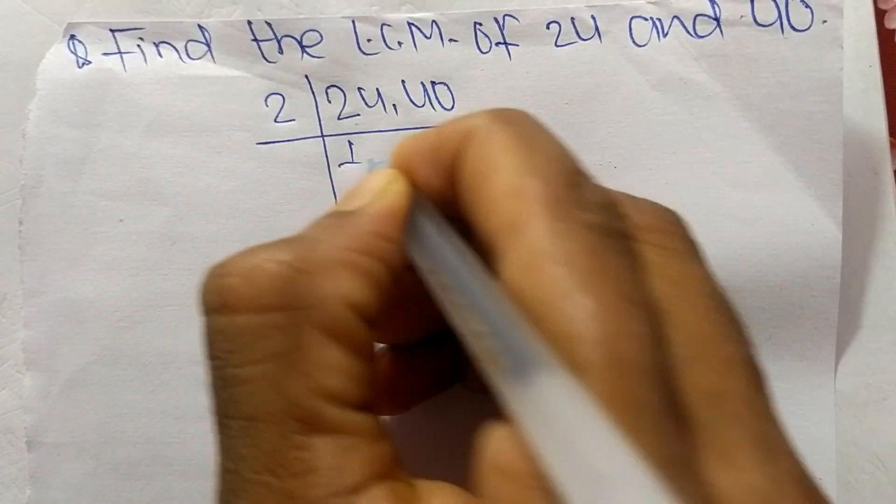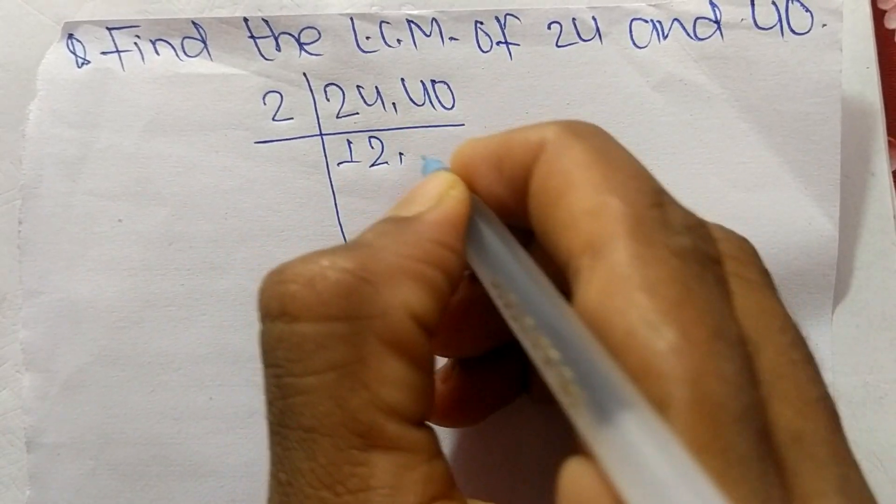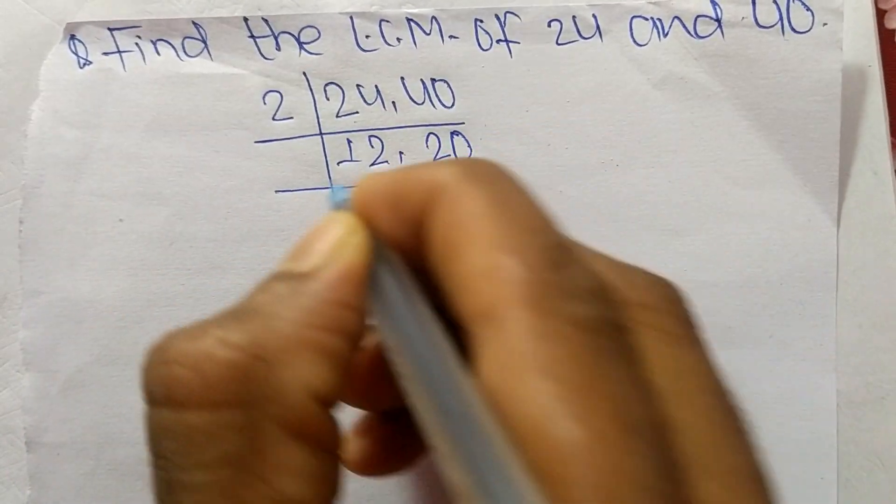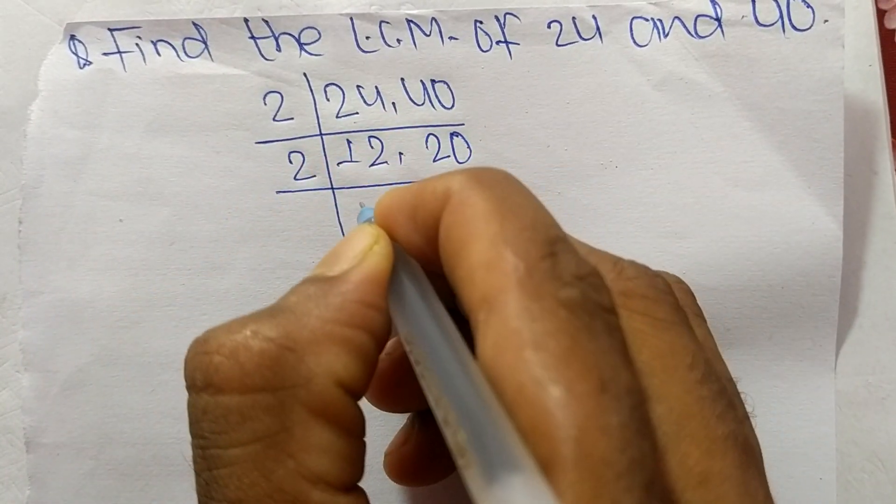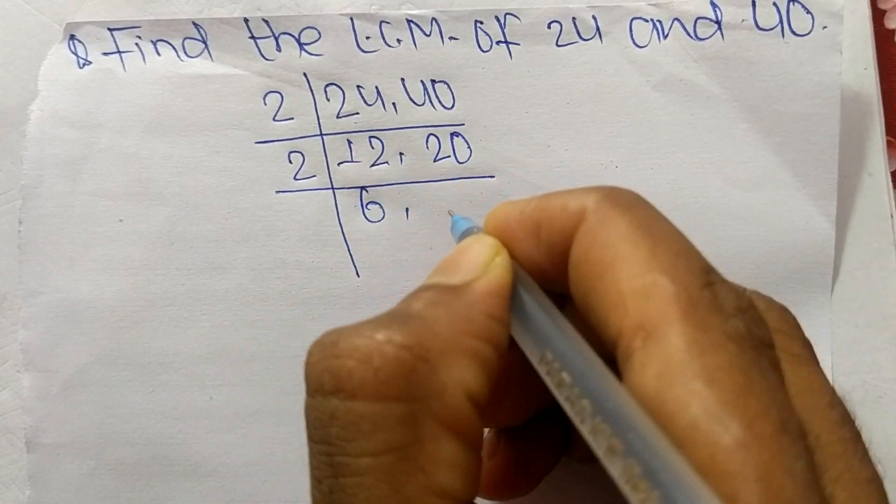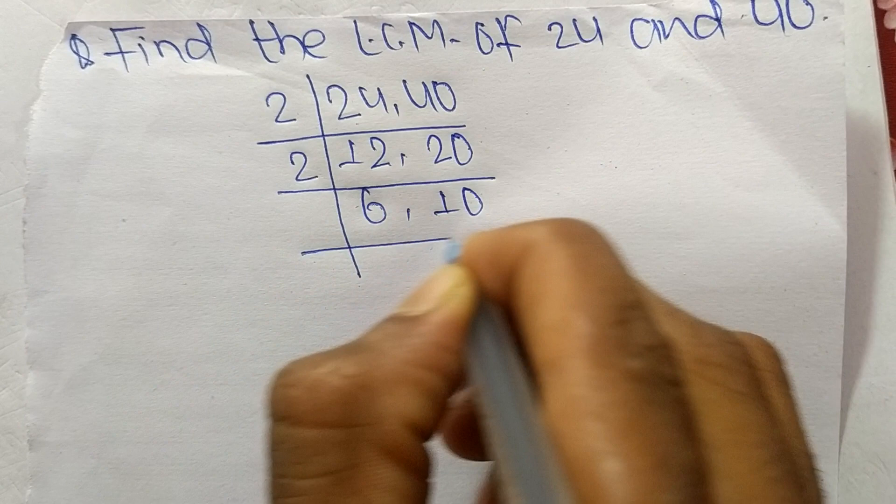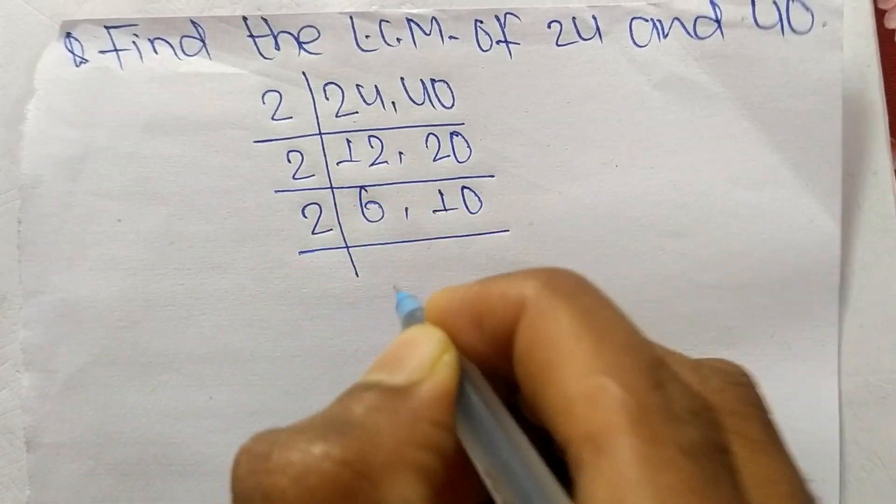2 times 12 means 24, 2 times 20 means 40. Again it is divisible by 2, so 2 times 6 means 12, 2 times 10 means 20.